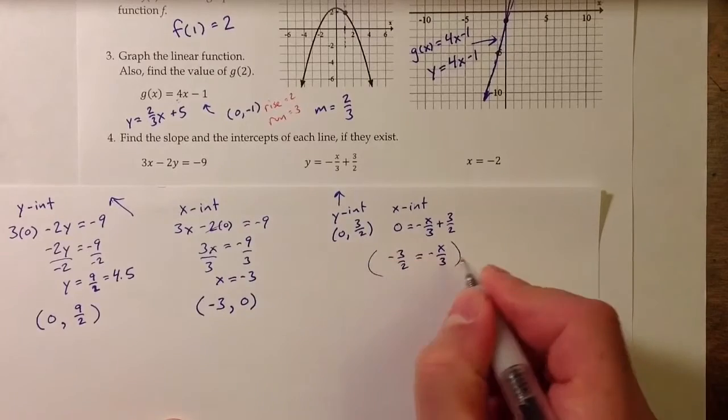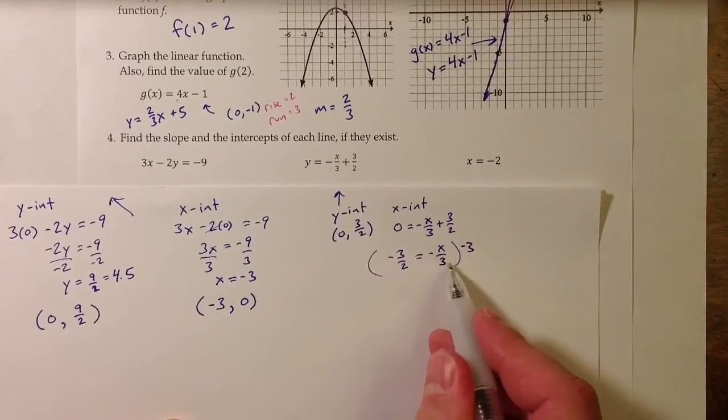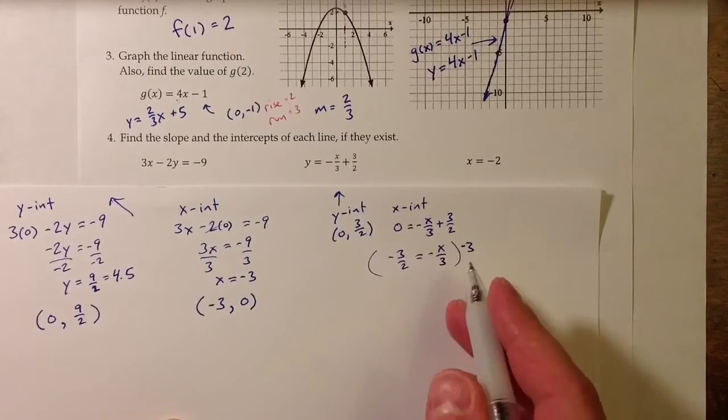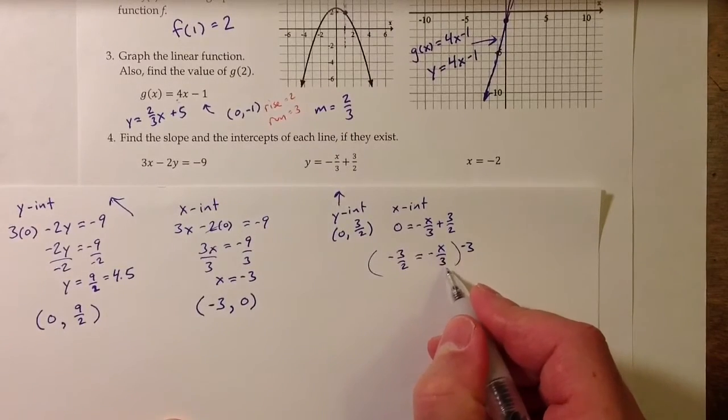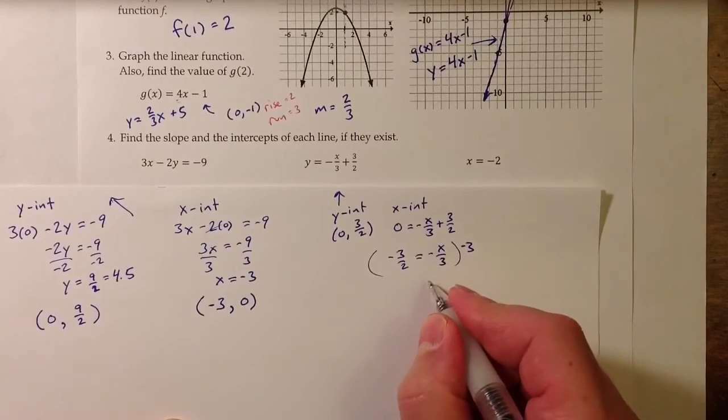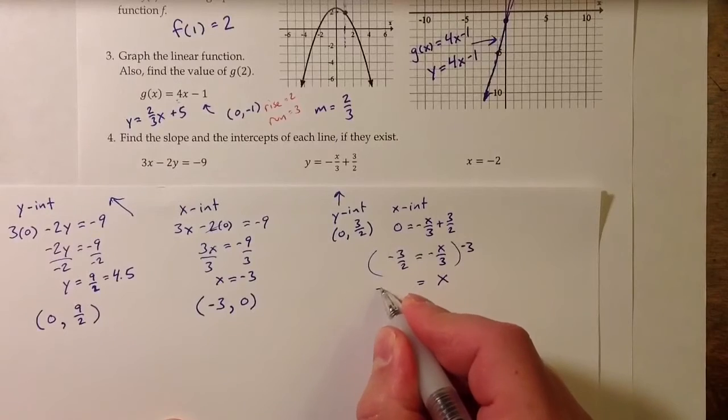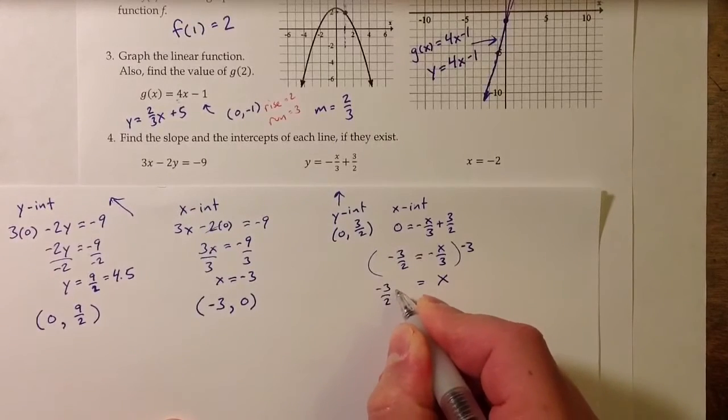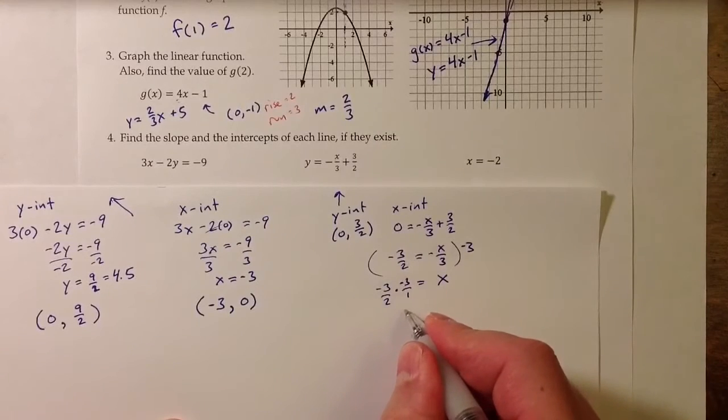Then multiply the whole equation by negative 3 to cancel the negative 3 that's multiplied by x. So negative 3 times x divided by negative 3 is just x. Multiplying negative 3 on the other side, I get negative 3 over 2 times negative 3 over 1, so we get positive 9 halves.